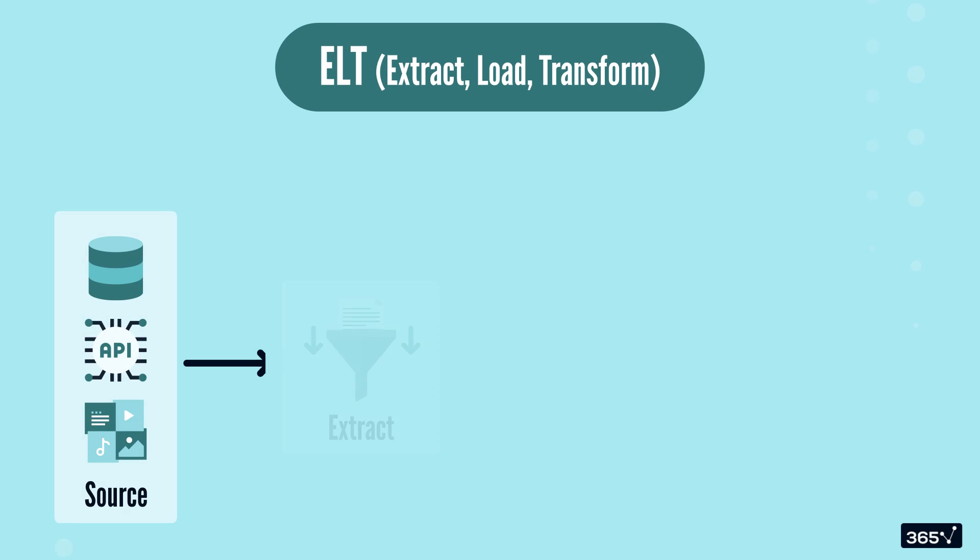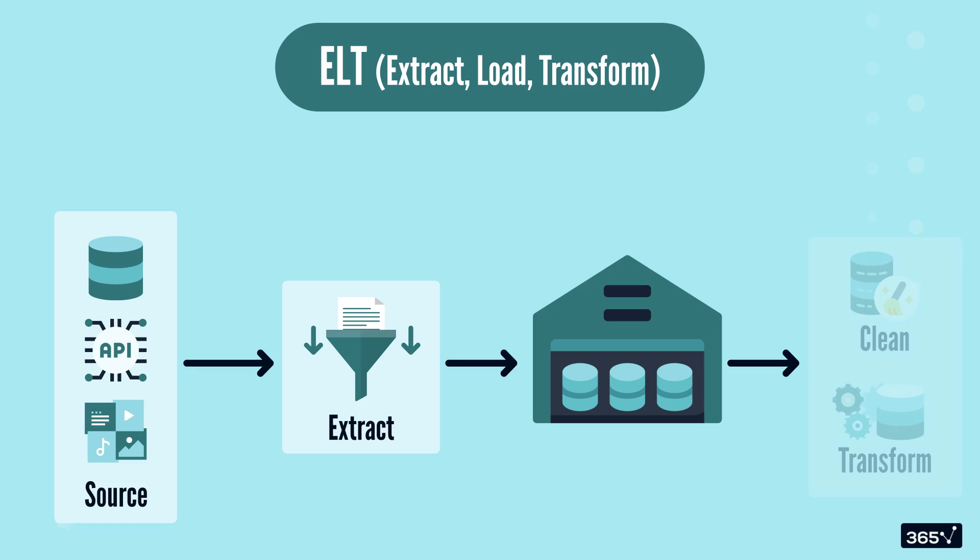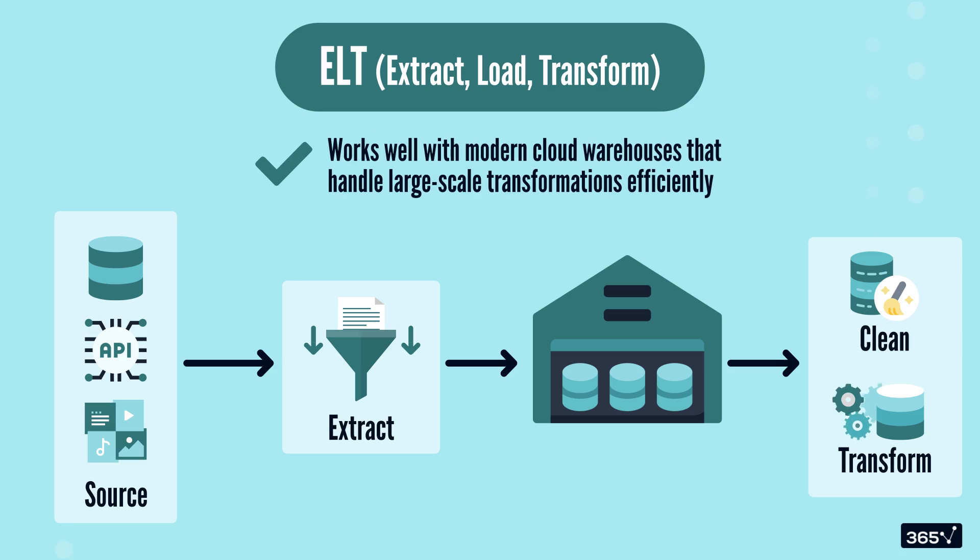ELT, or extract, load, transform, on the other hand, flips the order, loading raw data first and transforming it later within the warehouse. ELT works well with modern cloud warehouses that handle large-scale transformations efficiently.